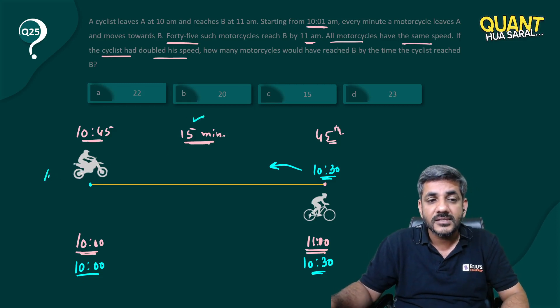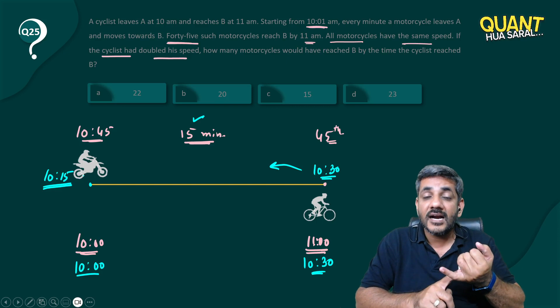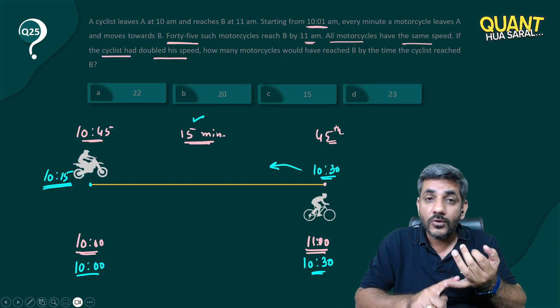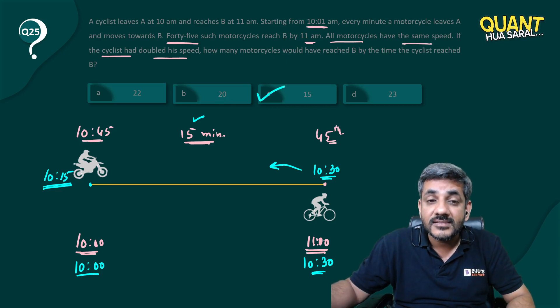That means this motorcycle must have started from here at 10:15. So can I say today the motorcycle that started at 10:01 met him, 10:02 met him, 10:03 up to 10:15, so there are 15 cyclists who would have met him today.